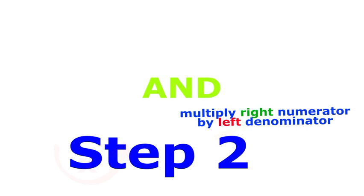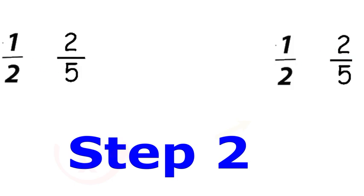In our example, we take the left numerator, one, and multiply it by the right denominator, five, which gives us one times five. Then we take the right numerator, two, and multiply it by the left denominator, two, which gives us two times two. Those are your two numbers.